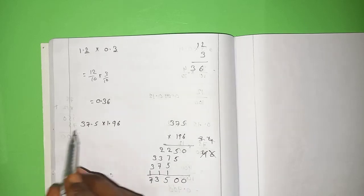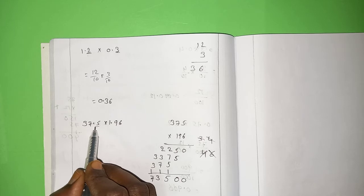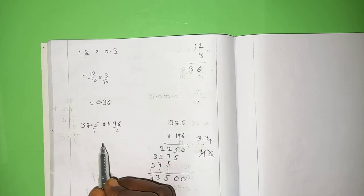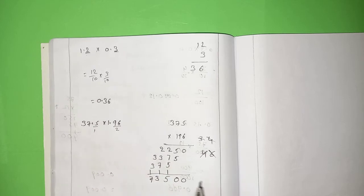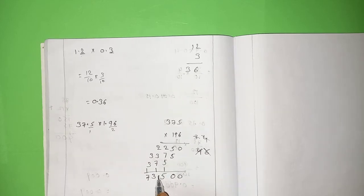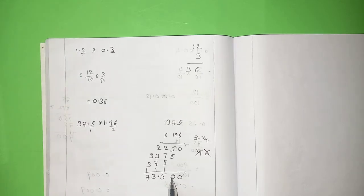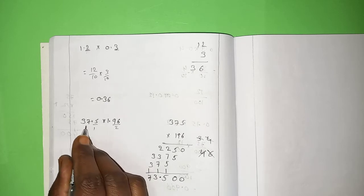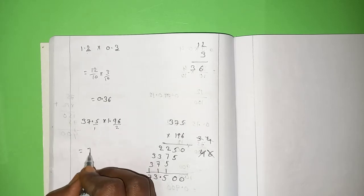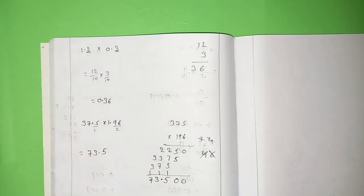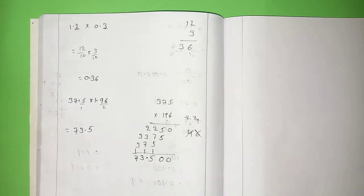Now, point after here, one digit is there. Here, point after two digits are there. 1 plus 2? 3. So, you have to place the point here. And I already told, after point, if there are any number of zeros are there, you can cancel it. So, the answer of 37.5 into 1.96 is 73.5. Let us move to the exercise 3.2.